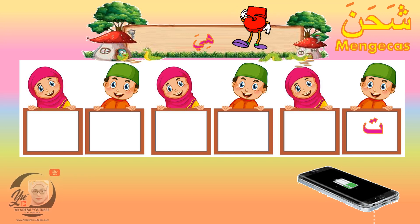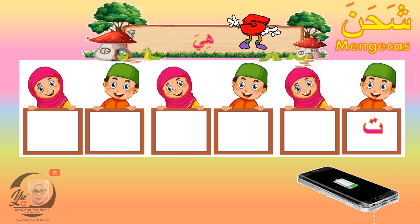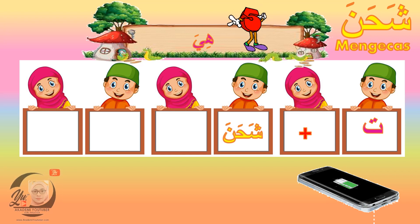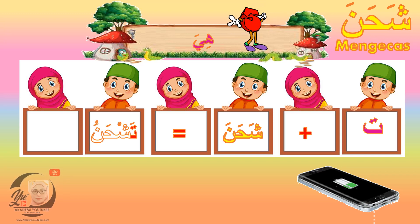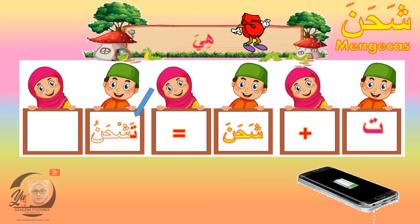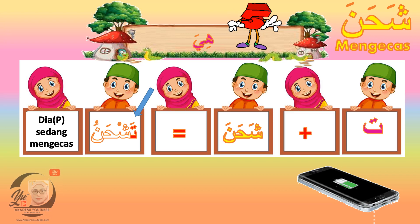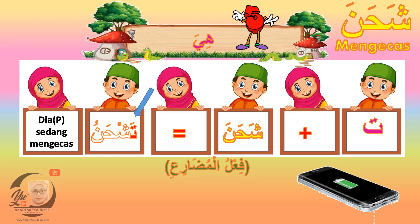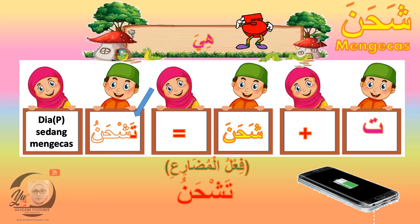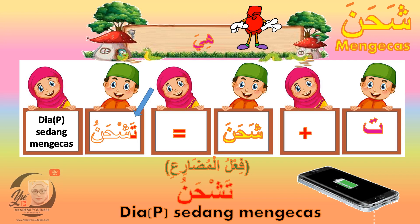Huruf YA ditambah di awal perkataan sebagai singkatan dhamir Hia. Kemudian dimasukkan ke dalam perkataan syahana menjadi Tashhanu. Huruf YA di awal perkataan Tashhanu sebagai singkatan Hia, yang membawa maksud dia perempuan sedang mengecas. Fi'lul mudari'i di sini adalah Tashhanu, yang bermaksud dia perempuan sedang mengecas.